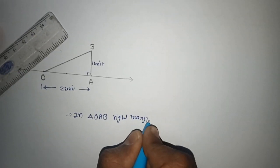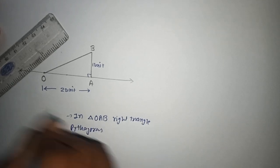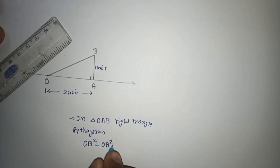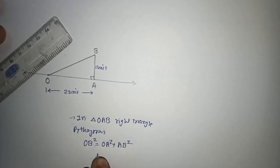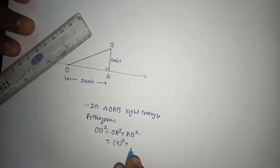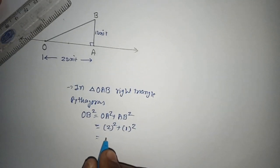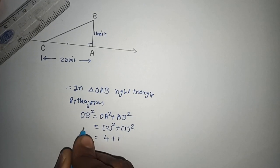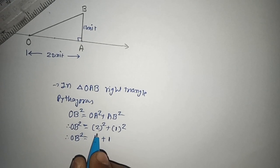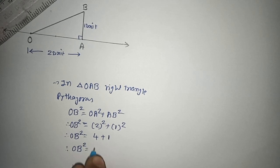In this right angle triangle, by Pythagoras theorem, OB² = OA² + AB². OA is 2 units, so it is 2² plus AB which is 1². So 2² equals 4 plus 1² equals 1. Therefore OB² is equal to 5.